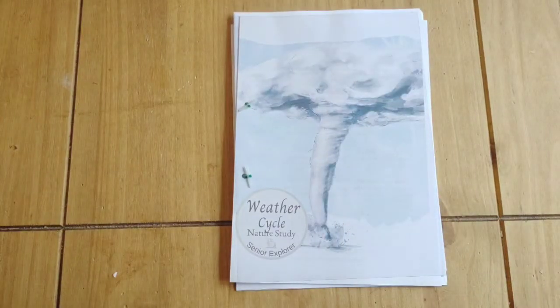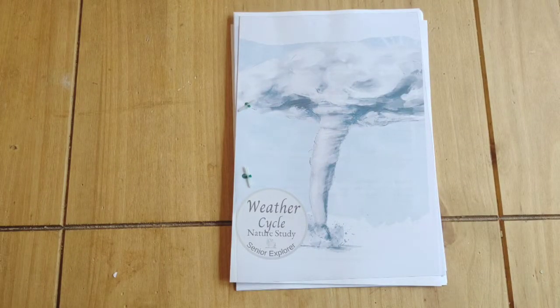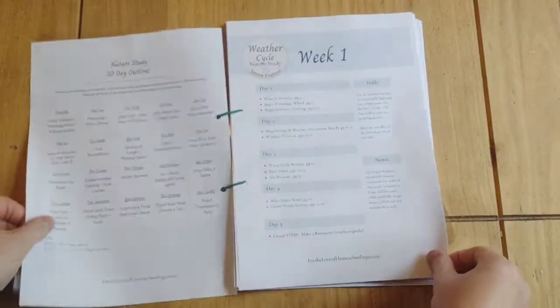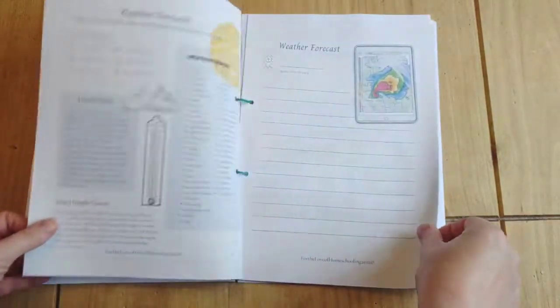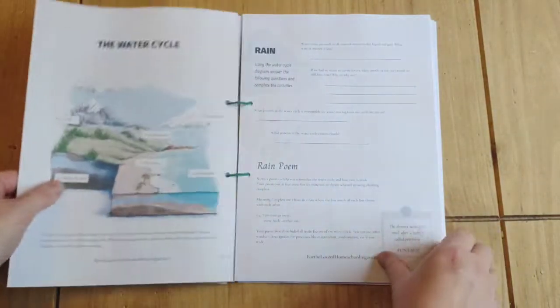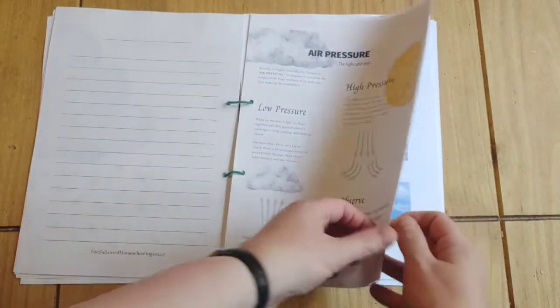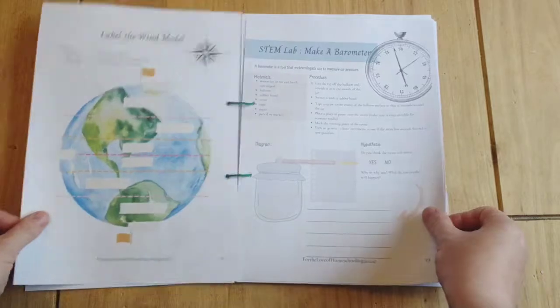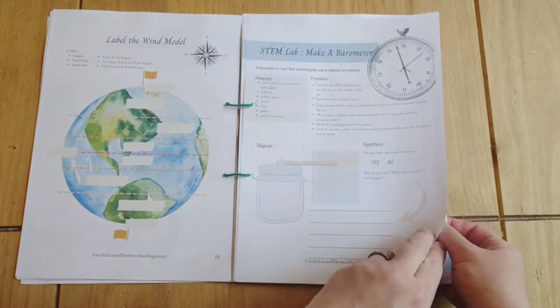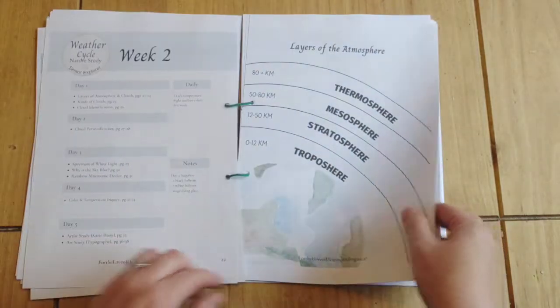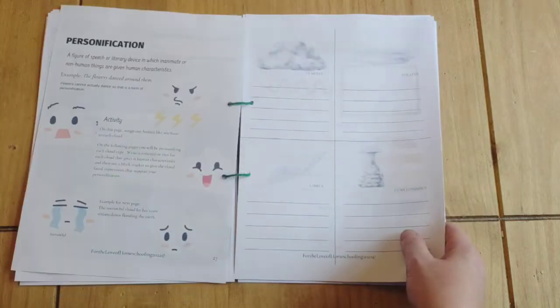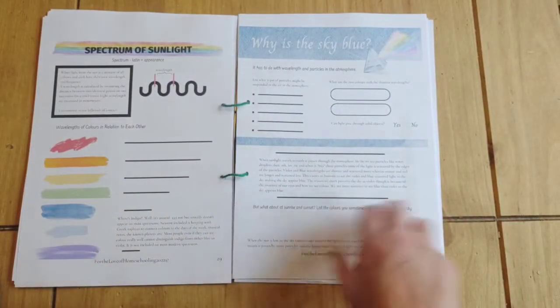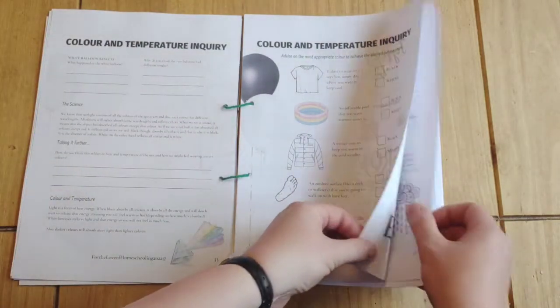Senior explorer, this is what my ten year old will be doing. There's a bit of an overlap in what the older three workbooks do, but they're not identical. Looking at air pressures, global winds, make a barometer. I quite like that there's some experimenty, crafty things, because our science doesn't have very much of that in it. It's quite nice to do some of that in another topic.